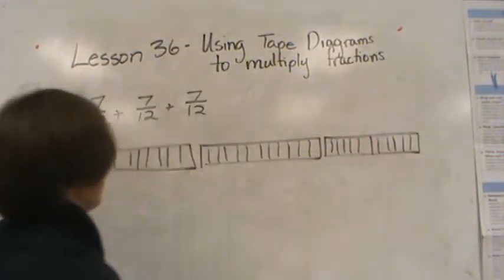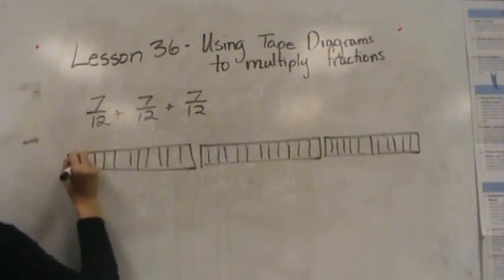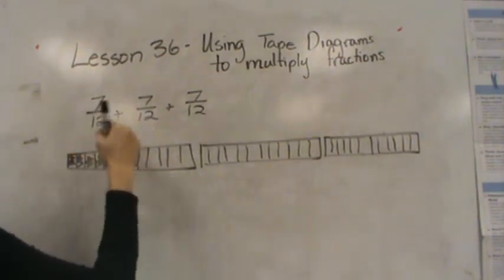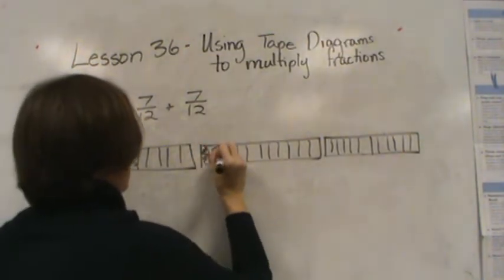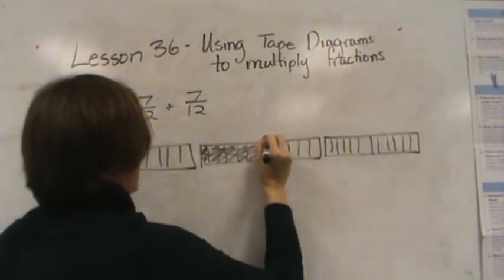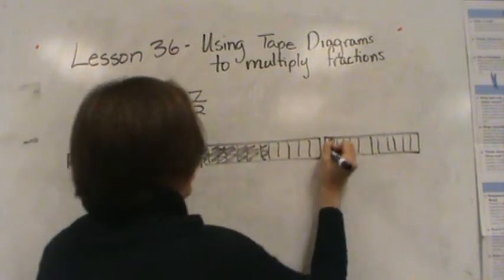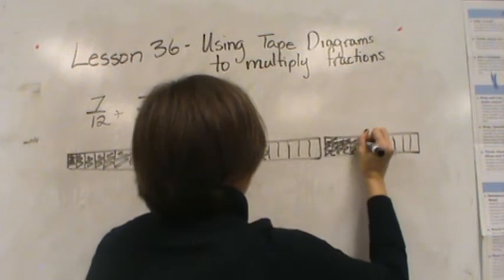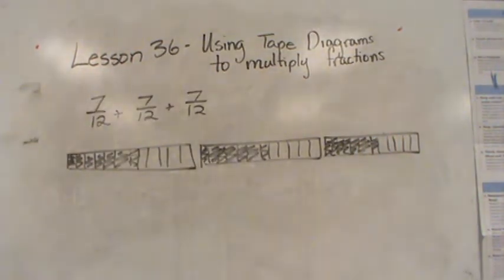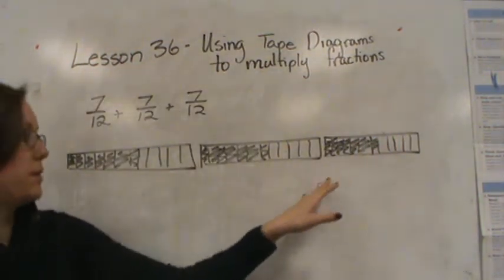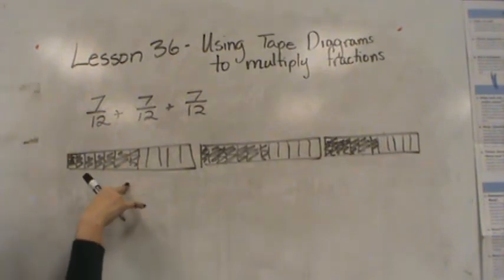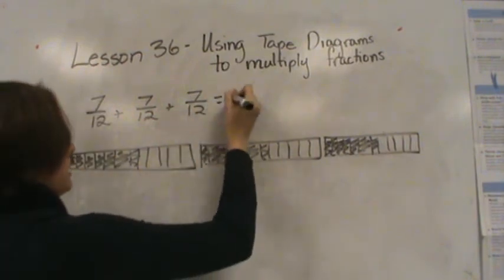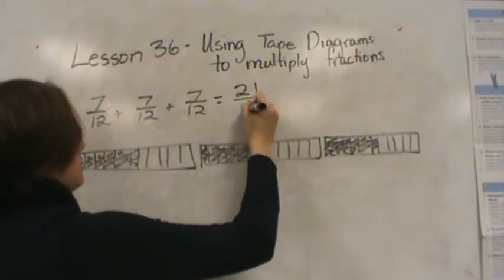I've divided my wholes into 12ths. Now let's make 7 of them: 1, 2, 3, 4, 5, 6, 7. That's 1 of the 7/12. Again dividing into 12ths, 1, 2, 3, 4, 5, 6, 7 — that's another 7/12. And 1, 2, 3, 4, 5, 6, 7 — there's my last 7/12. So if I count all of these together, I'd have 7/12, 14/12, 21/12. So my total is 21/12.